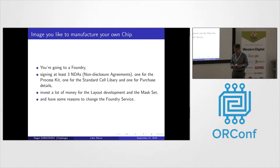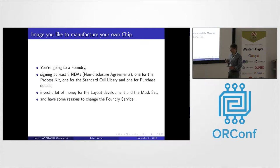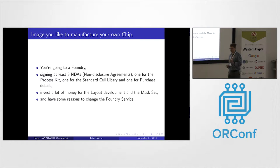The next NDA is for the standard cell library — mostly someone takes one from Synopsys or other companies, but you have to sign an NDA for that also. The third NDA covers the purchase details: how many wafers the foundry can deliver per month maximum, how many wafers you commit to take from the fab every month at minimum, how many chips on the wafer, which yield you'd expect. So you have to sign three times, a huge bunch of papers, just to produce a chip.